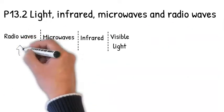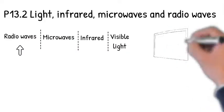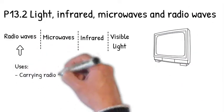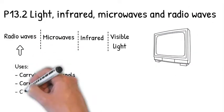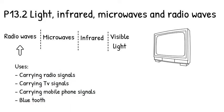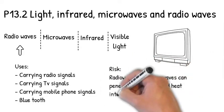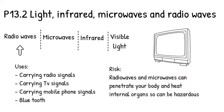Finally, let's look at radio waves. These are the longest wavelength of the entire electromagnetic spectrum. Their uses include carrying radio signals, TV signals, mobile phone signals, as well as Bluetooth around the home. Radio waves and microwaves can penetrate your body and heat internal organs, so can therefore be hazardous.